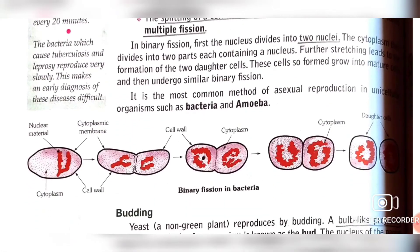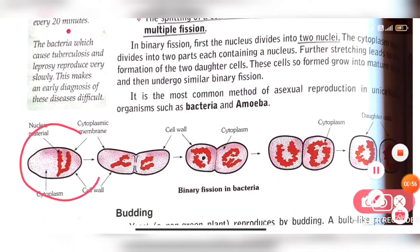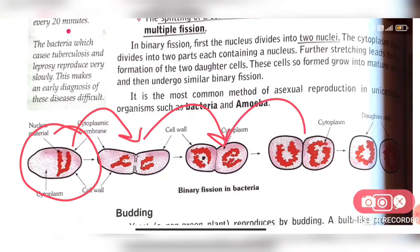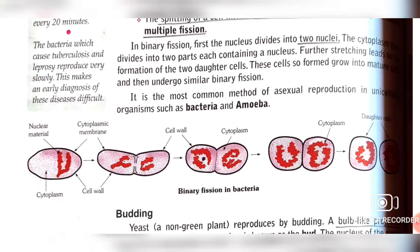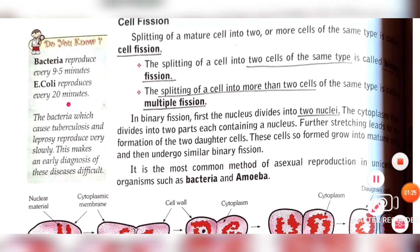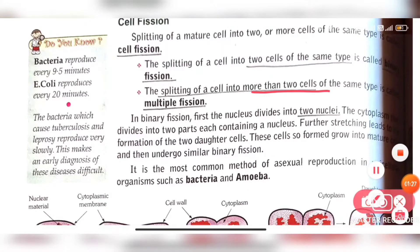Look at this picture. This is a mature cell, and this cell is dividing into two same-type cells. Sometimes it may divide into more than two cells — that method is called cell fission. When the splitting happens and two same-type cells are produced, that is binary fission. When more than two cells of the same type are produced, that is called multiple fission.